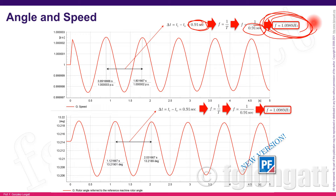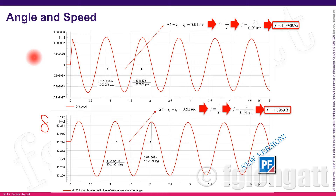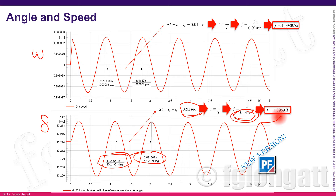Calculating the frequency from the period, the oscillation frequency for this very specific example is 1.0985 Hz. Performing the same exercise on the rotor angle — calculating its period of oscillation — also gives 0.91 seconds, confirming the same oscillation frequency of 1.0985 Hz.